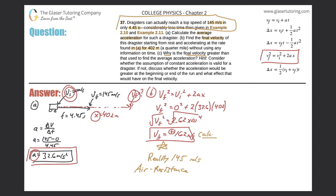The problem also asks whether acceleration would be greater at the beginning or the end of the run. Acceleration is greater at the beginning. At the start, more of the dragster's power goes toward increasing velocity. As speed increases, air resistance grows, so more power must be allocated to overcoming that resistance rather than accelerating the vehicle.